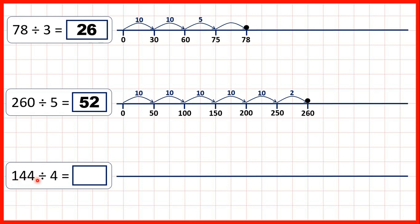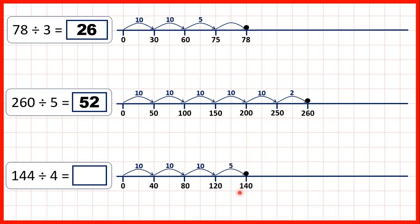And now 144 divided by 4. A jump of 10 times 4 takes us to 40, another to 80, and another to 120. Adding another 10 times 4 would be too many — that would take us to 160. But 5 times 4 is 20, and adding 20 to 120 takes us to 140. So a jump of 5 times 4 gets us to 140, and then just one more jump of 4 takes us to 144. Altogether we've jumped 10, 20, 30, 35, 36. So 36 is our answer.